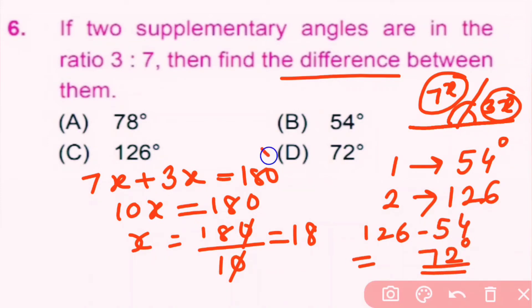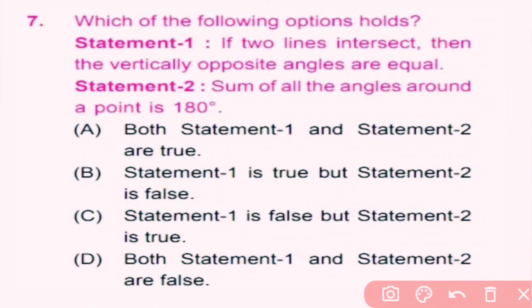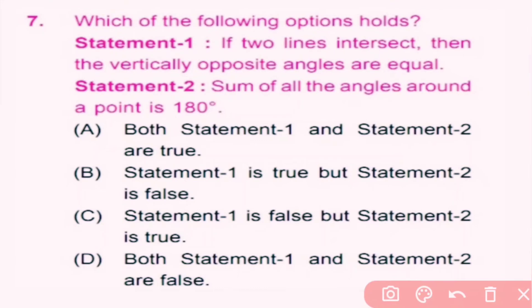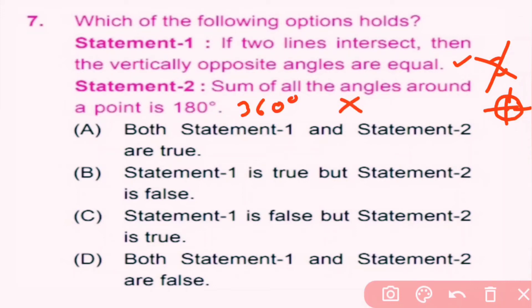Question number 7: Which of the following options holds? Statement 1: If two lines intersect, then vertically opposite angles are equal — this is true. Statement 2: The sum of all angles around a point is 180 degrees — but the sum of all angles around a point is actually 360 degrees, so this statement is false.